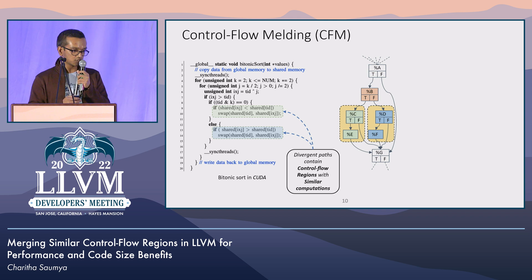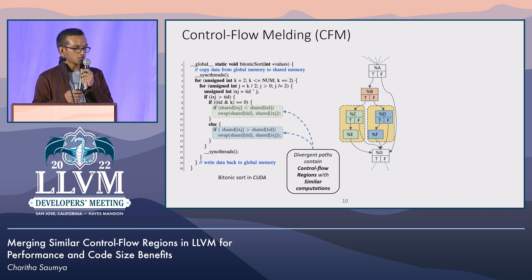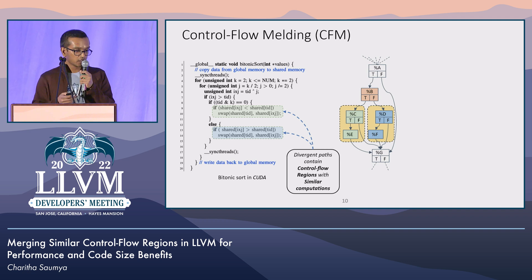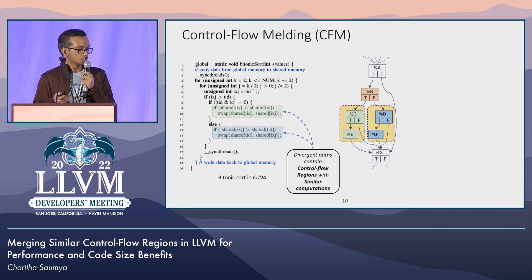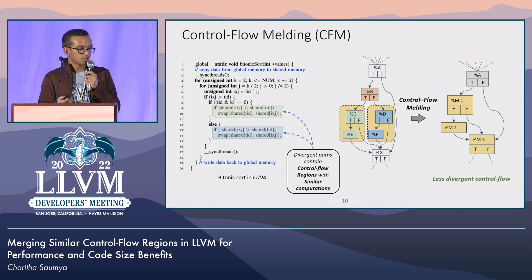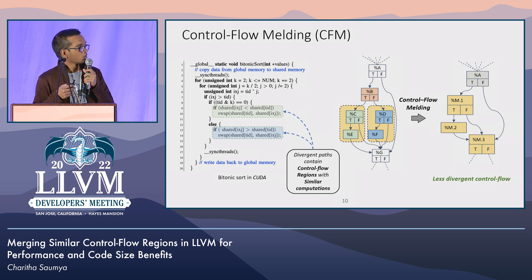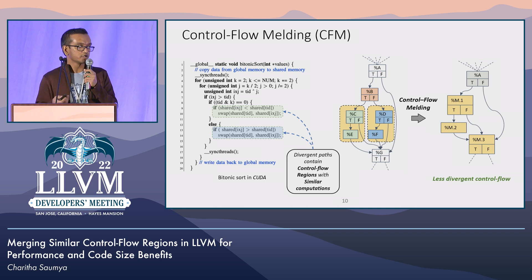This example shows a CUDA implementation of bitonic sort. It has a divergent if-else branch with control flow regions inside containing similar computations, and its control flow graph is shown as well. As you can see, regions C-to-G and D-to-G are isomorphic — they are structurally similar — and you can merge them to reduce code size and control flow divergence. You can obtain this merged control flow, which is simpler, has less divergence, and for CPU programs, merging instructions and control flow can potentially reduce code size.